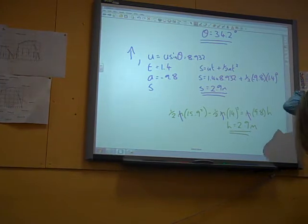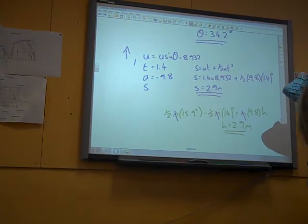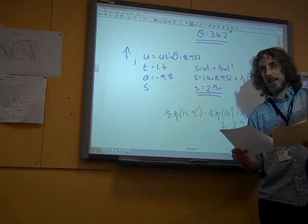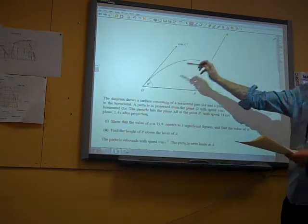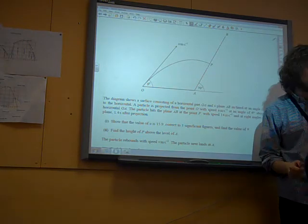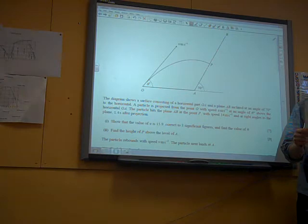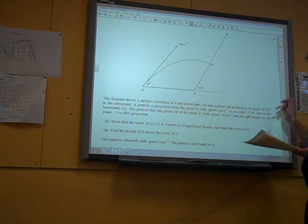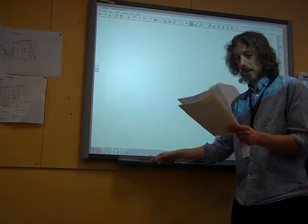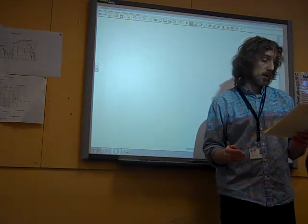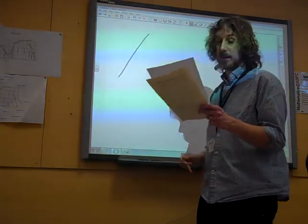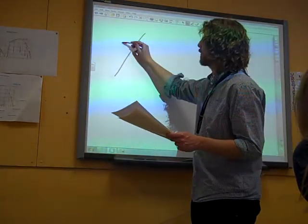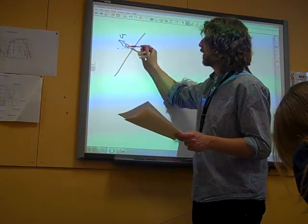Part 3: The particle now rebounds. The particle next lands at A. So it's done its flying thing, it's hit there, it's rebounded a little bit and dropped down and landed at A. Find the value of the speed for which it rebounds. Thinking about how we might tackle this - my instinct was to say here it is, it's hit the wall. If it hit at 90 degrees it will rebound at 90 degrees. So here we have it departing from the wall at an angle of 20 degrees.